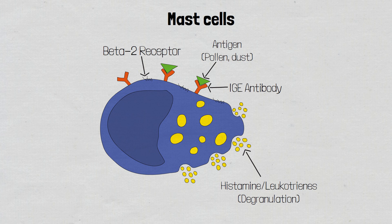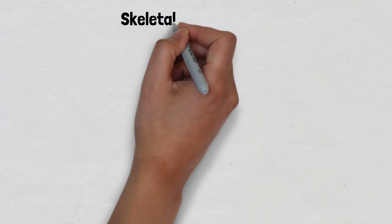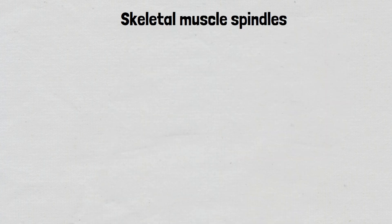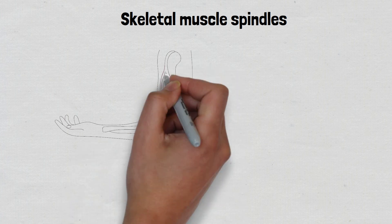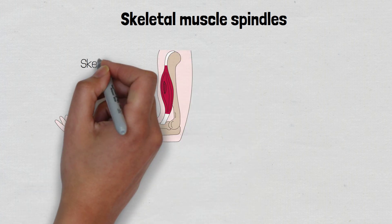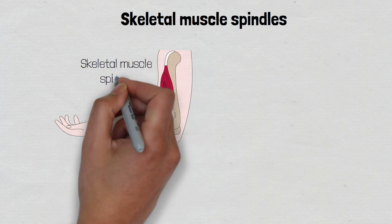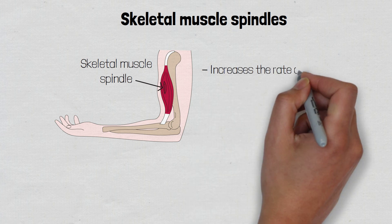Other sites of beta-2 receptors include skeletal muscle spindles, which, when stimulated, increase the rate of contraction, which is why patients may experience tremors after beta-2 agonist use.